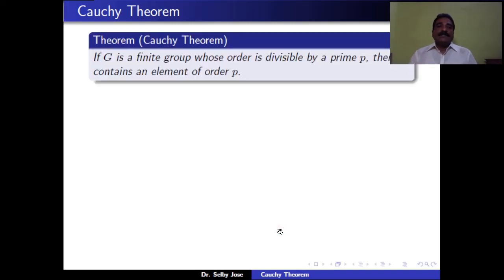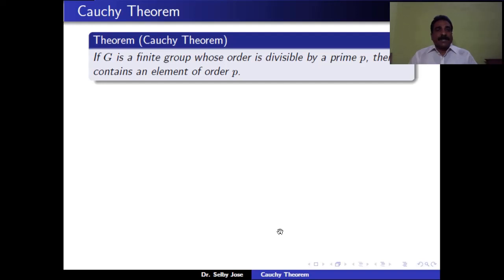The statement of Cauchy's theorem: If G is a finite group whose order is divisible by prime P, then G contains an element of order P. This means if P is a prime number which divides the order of the group, then G has an element of order P. Let that element be A. Then the cyclic group generated by A is a subgroup of G of order P. So this states that if P divides the order of the group, then G has a subgroup of order P.